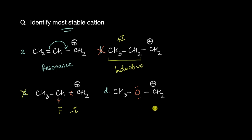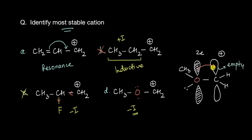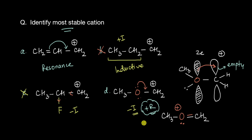Now let's analyze cation D. We have an oxygen atom, which is also highly electronegative, so it will show minus-I. However, this oxygen has a lone pair right next to the carbocation. This lone pair is going to overlap with the empty orbital of the carbocation, leading to a new resonating structure. So in this cation, oxygen shows minus-I via induction but also plus-R via resonance. Since resonance effects are more important, this cation is ultimately stabilized via resonance. So the correct answer is either A or D.